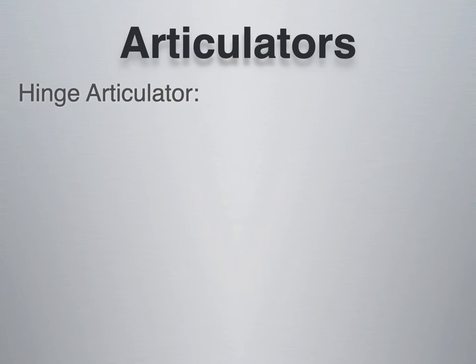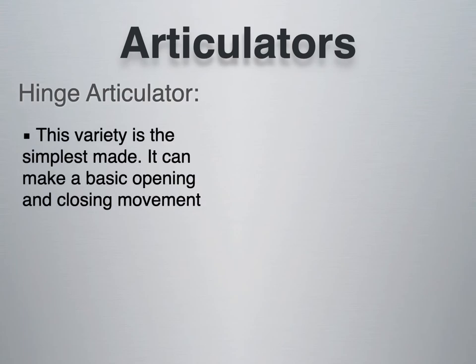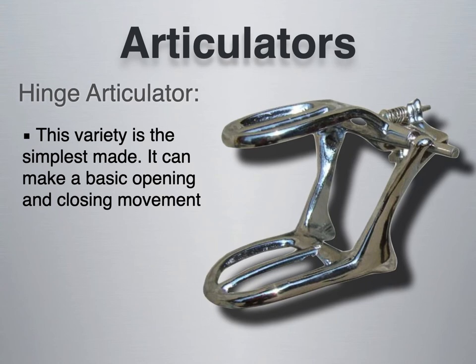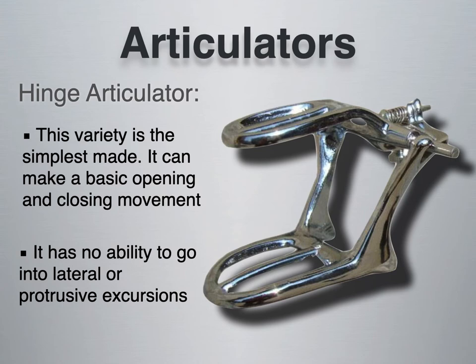One of the more common hinge articulators you'll see in many laboratories is the metal hinge articulator. It's the simplest type and can make only basic opening and closing movements. Although it does have a spring in the back and you can move the condyle elements left and right, it's not really meant for those movements — it doesn't have the ability to go into lateral left and right, or protrusive forward and back excursions. However, it seems to be the very common go-to articulator for many laboratories, whether for removable dentures or fixed work. In my opinion, I see these mainly used for small single units and bridge work for fixed prosthodontics.